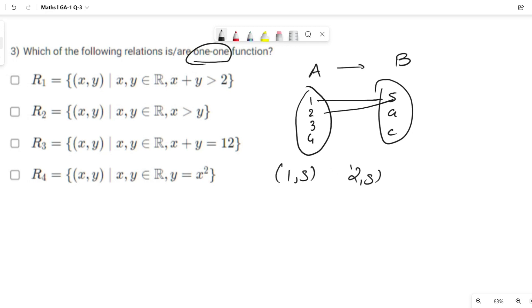...and this is not 1-1, that will be many-1. So a 1-1 function has unique element for every element from codomain. Okay, so let us check the options.